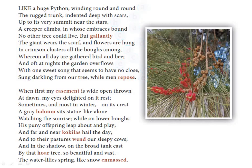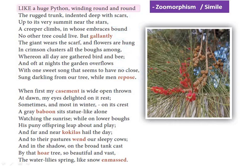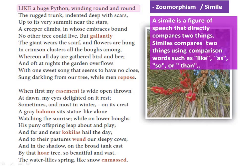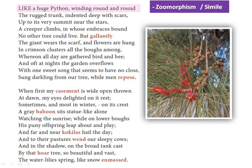The first line, 'like a huge python winding round and round,' uses zoomorphism. Zoomorphism is describing the vine in animal terms — as a python. It is the device of giving animal-like qualities to anything that is not that animal, such as humans, gods, plants, and inanimate objects. Here, simile is also used. A simile directly compares two things using comparison words such as like, as, so, or that. Here the creeper is compared to a huge dangerous python using the word 'like.'